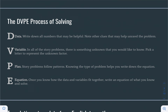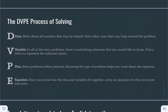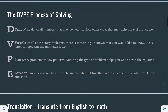In the DVPE process of solving, the D stands for data, the V stands for variable, the P stands for plan, and the E stands for equation. In the data step, you write down all the numbers that may be helpful and note other clues that may help unravel the problem. In the variable step, you pick a letter to represent the unknown factor. In the plan step, you know that story problems follow patterns — knowing the type of problem helps you write down the equations. In the equation step, once you know how the data and variables fit together, write an equation of what you know and how to solve.